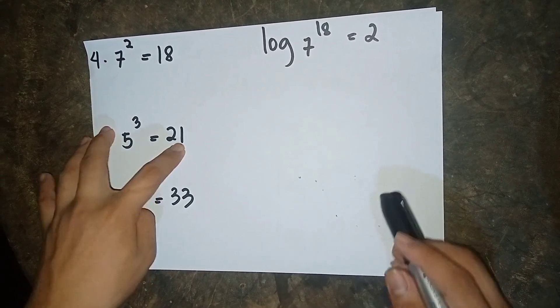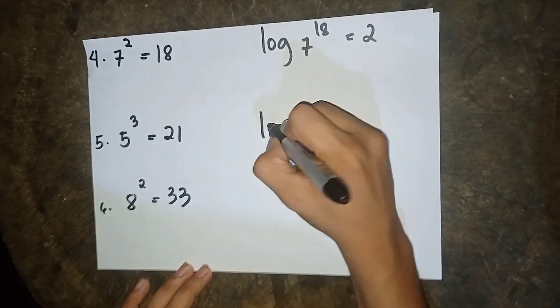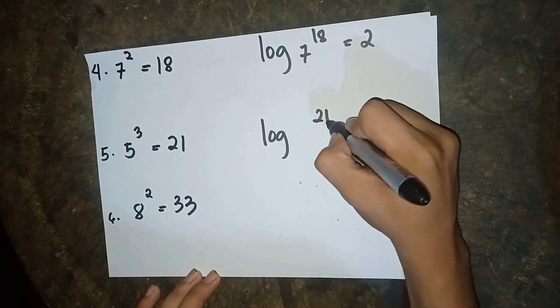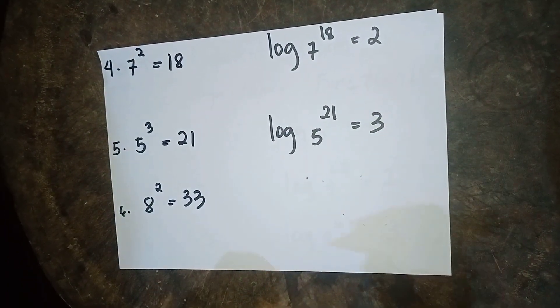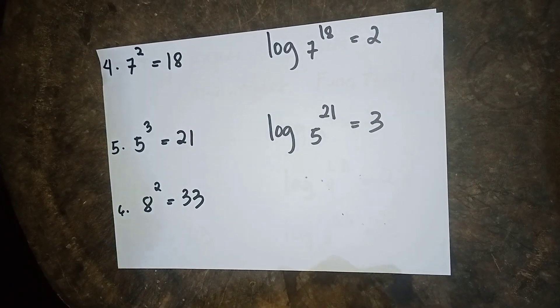And then our example number 5 is 5 to the power of 3 is equal to 21. So our answer is log 21 base of 5 is equal to 3. So that's our answer number 5.